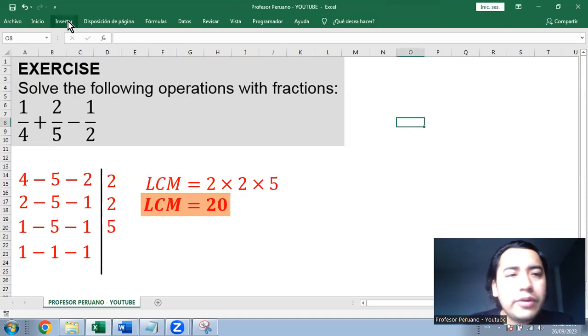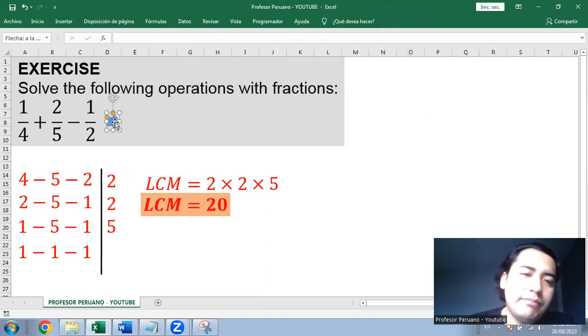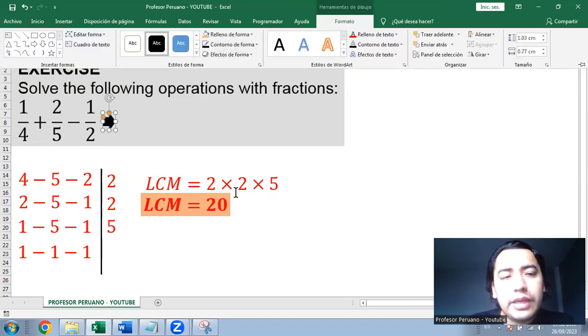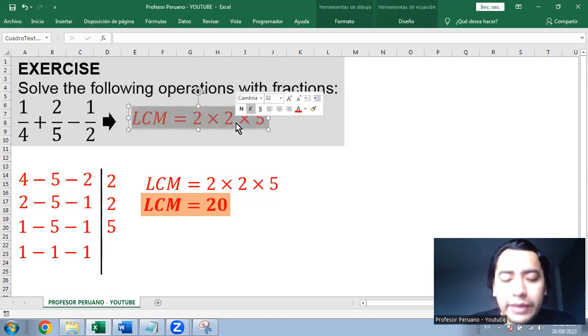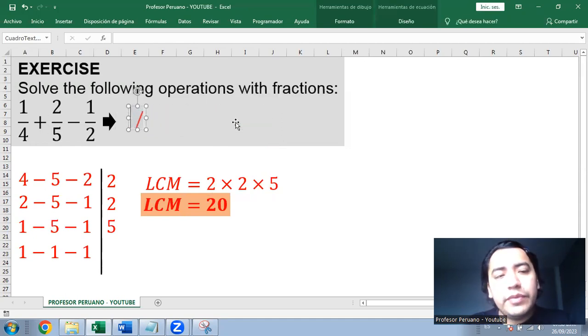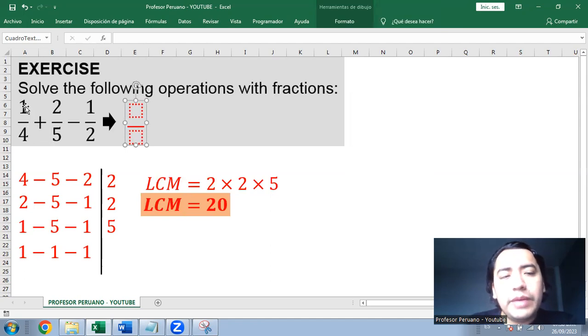And now we are going to take the fractions and make them homogeneous fractions. That means we are going to find equivalent fractions for them to make it easier to solve. So 1/4 we can multiply by 5 and by 5, the numerator and the denominator. So we get 1 times 5 is 5, 4 times 5 is 20.